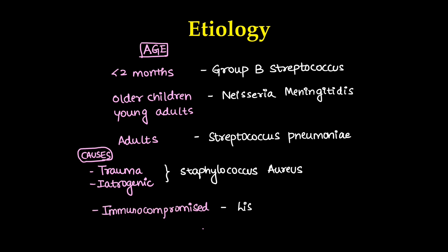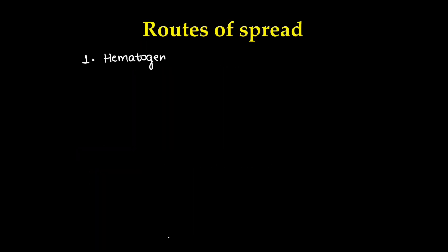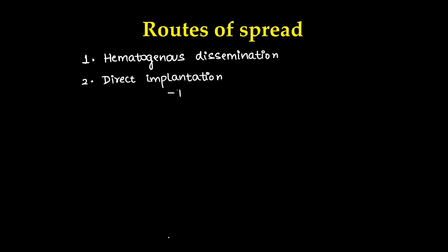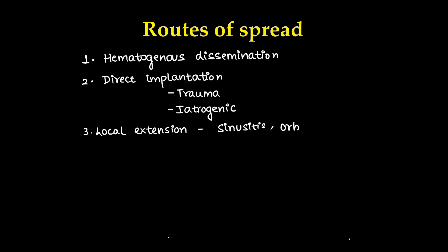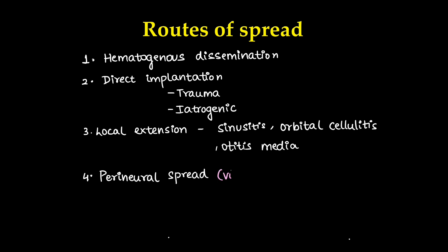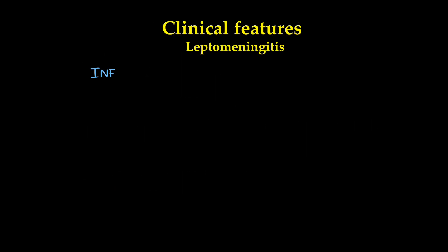In immunocompromised patients, Listeria monocytogenes is the main cause. Routes of spread of infection to the brain include hematogenous dissemination, which is the most common type; direct implantation in cases of trauma and iatrogenic cases; local extension from localized infections like sinusitis, orbital cellulitis, otitis media, and mastoiditis; and perineural spread, which is seen in viral meningitis.